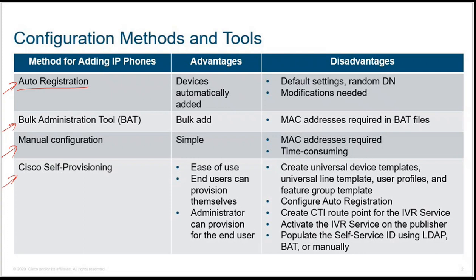The disadvantages of autoregistration are that default settings or random DNs will be provided. If you specifically want a device to get a number, say 1100, it will not guarantee that DN only, because it depends on the automatic registration process and any random DN from the range will be provided. Modifications are also needed, since changes specific to any device must be done separately, as by default only the pre-configured settings apply and are the same for all devices.